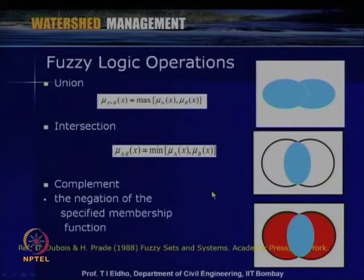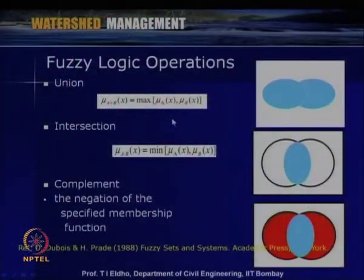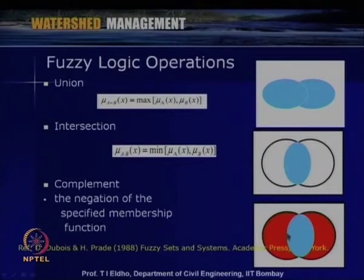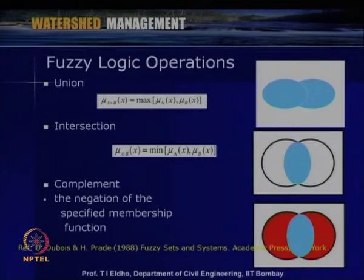In fuzzy logic operations, given two sets A and B, the union is the maximum of mu_A(x) and mu_B(x), as shown in the figure. The intersection is the minimum of mu_A(x) and mu_B(x). The complement considers the negation of the specified membership function — the two outer areas rather than the central region. These fuzzy logic operations allow us to define relationships for the particular problems being addressed.